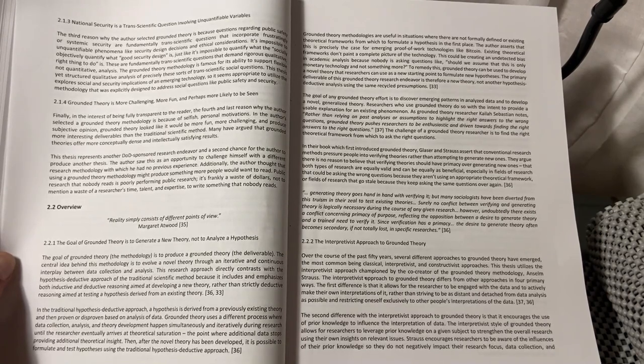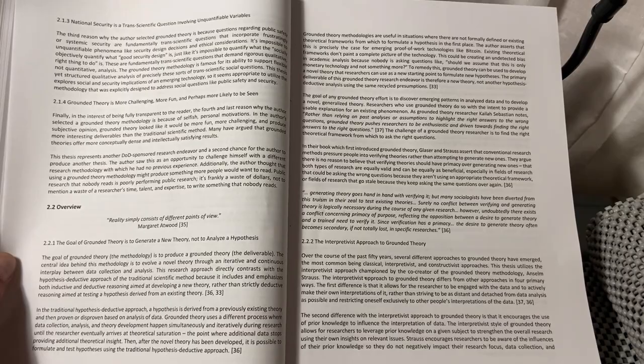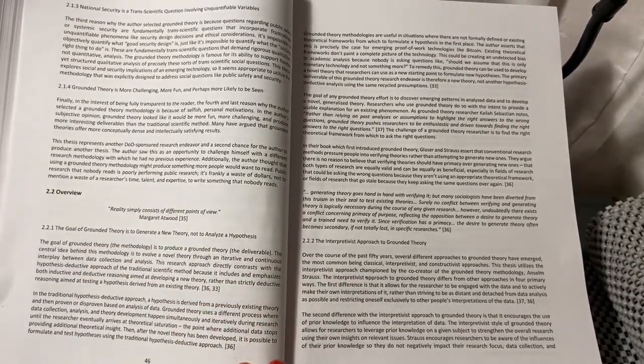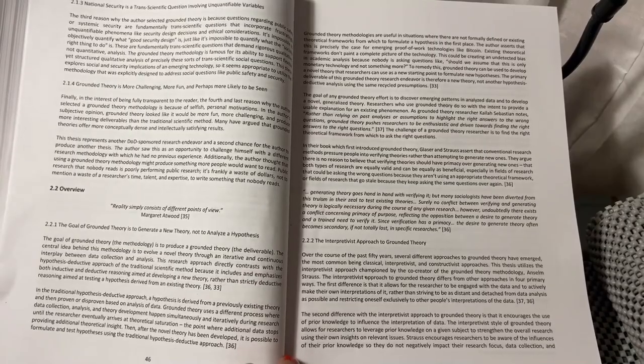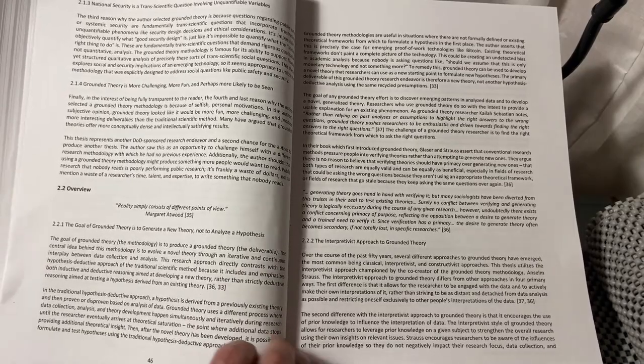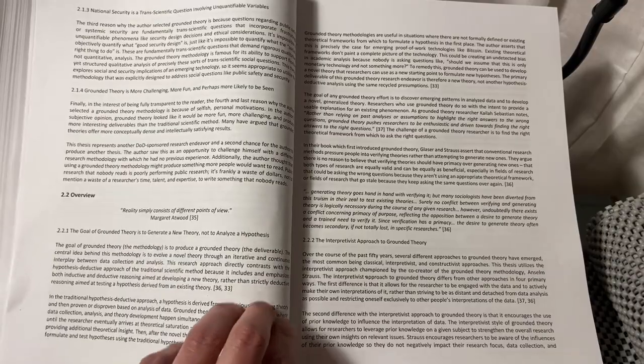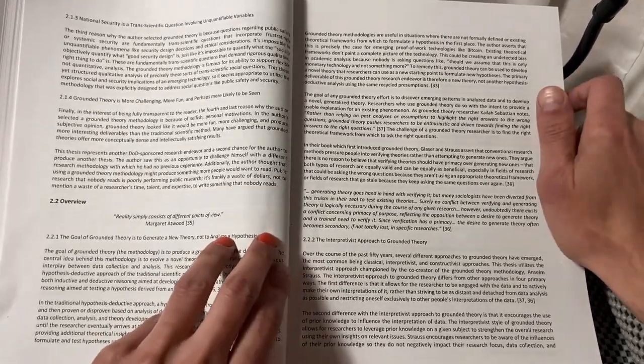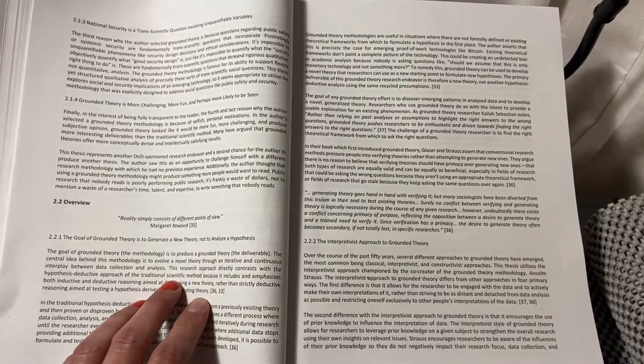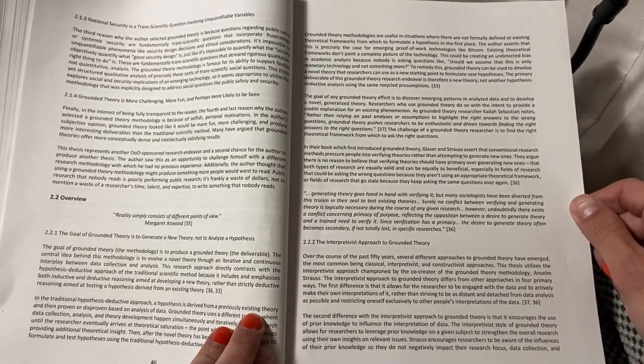The Interpretivist's Approach to Grounded Theory differs from other approaches in four primary ways. The first difference is that it allows the researcher to be engaged with the data and to actively make their own interpretations of it, rather than striving to be as distant and detached from data analysis as possible, restricting oneself exclusively to other people's interpretation of the data. The second difference with the Interpretivist's Approach to Grounded Theory is that it encourages the use of prior knowledge to influence the interpretation of data.